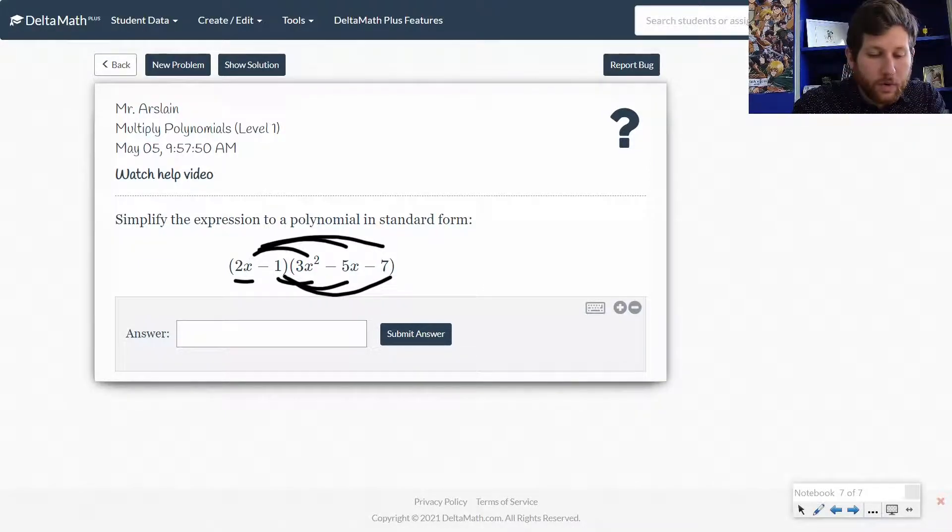2x times 3x squared, that's 6x cubed, right? 2x minus 5x is negative 10x squared, and then 2x times negative 7 is negative 14x.